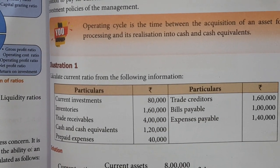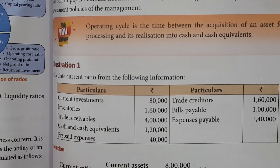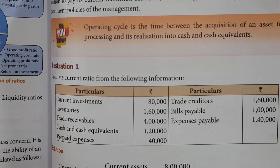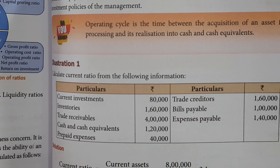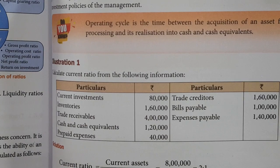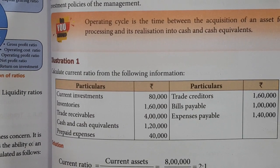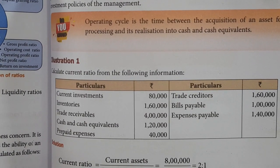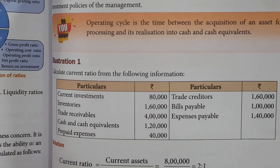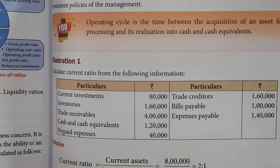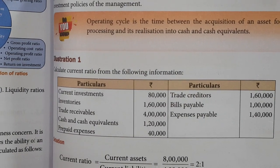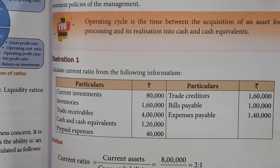Good day, dear students. In accountancy, we are going to see chapter 9. Now in this video, we are going to see illustration 1. Calculate the current ratio from the following information.